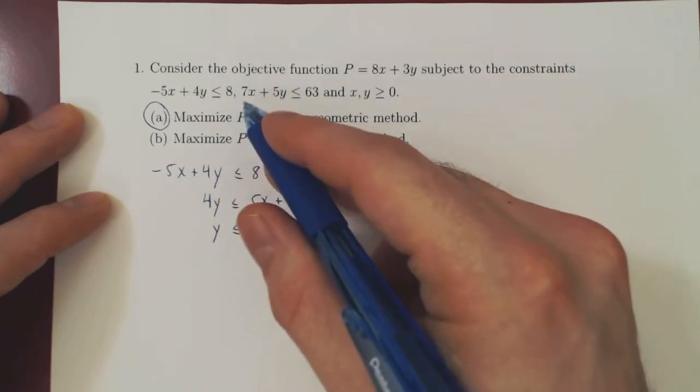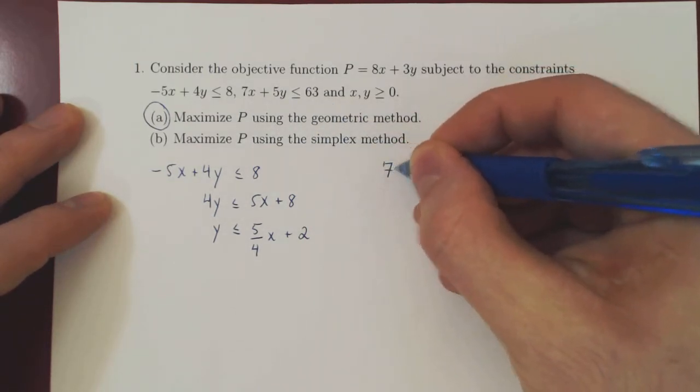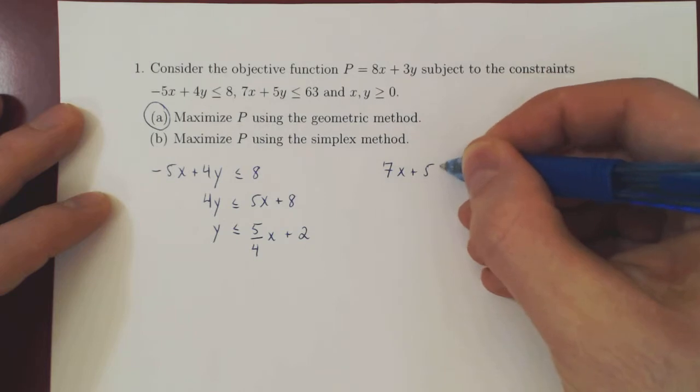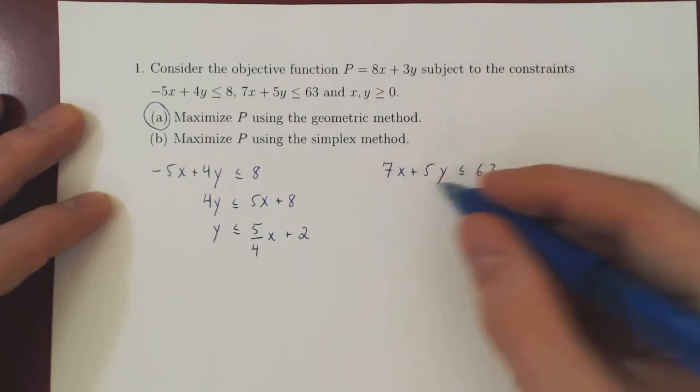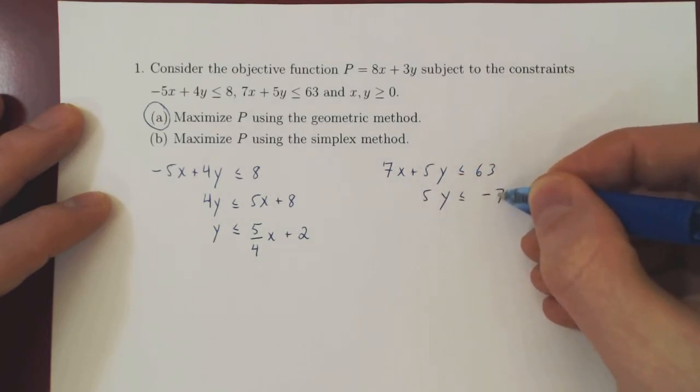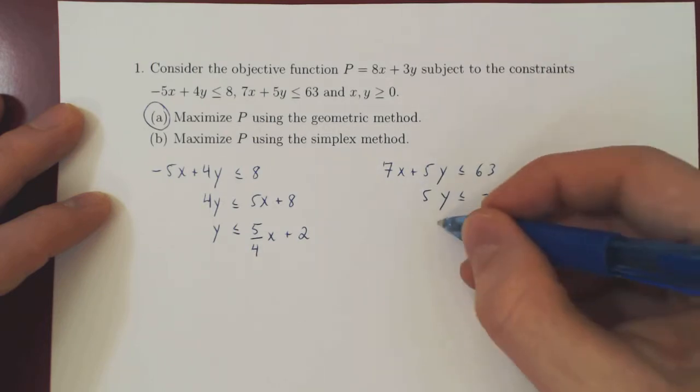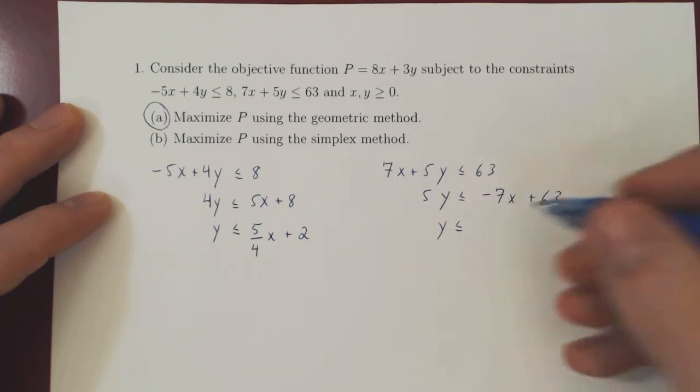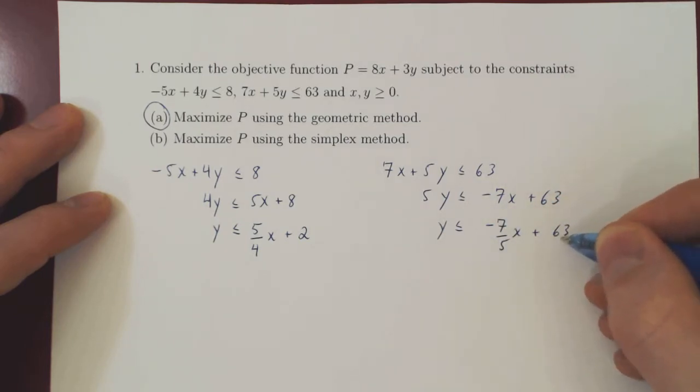Let's do the same thing for the second inequality. So 7x plus 5y is at most 63. Subtract 7x on both sides. So 5y is at most negative 7x plus 63. Divide by 5. Y is at most negative 7 over 5x plus 63 over 5.